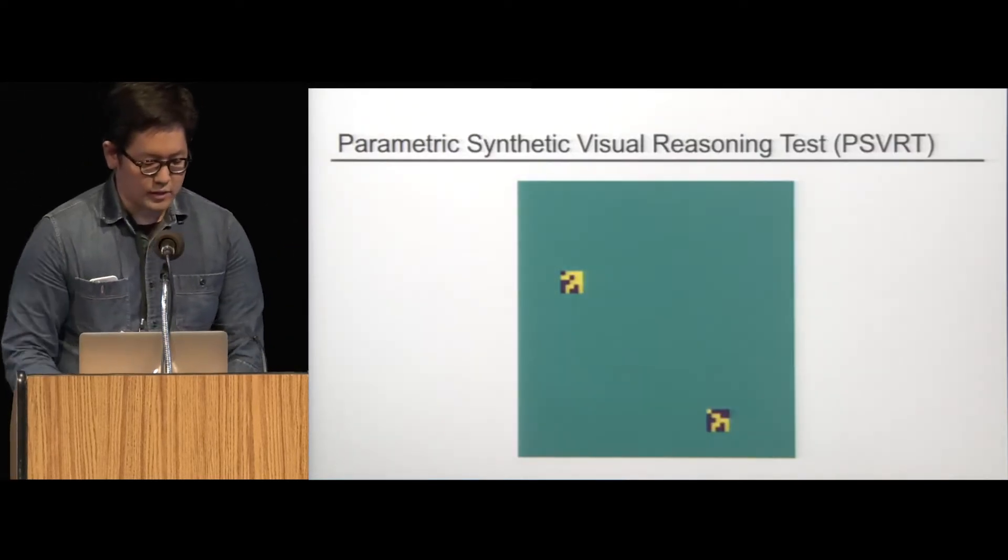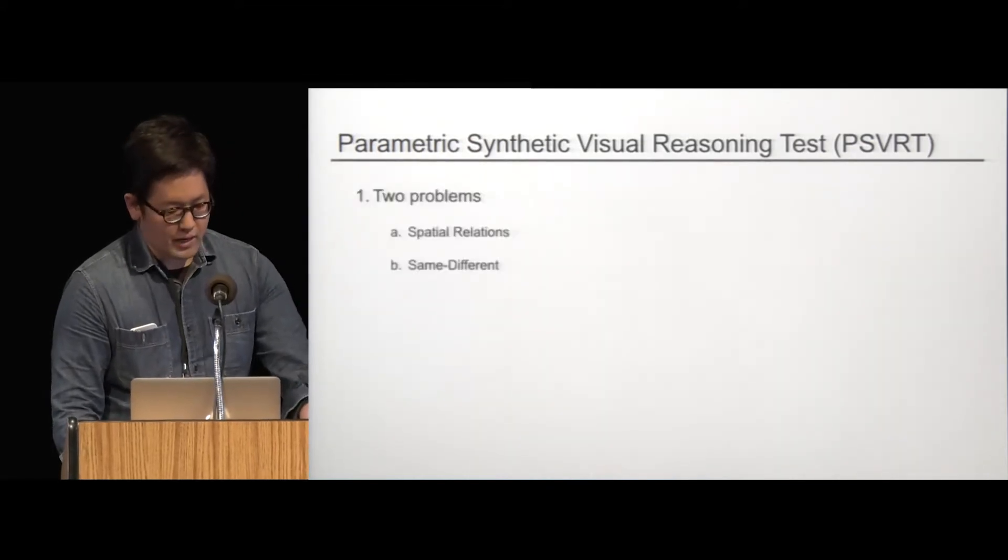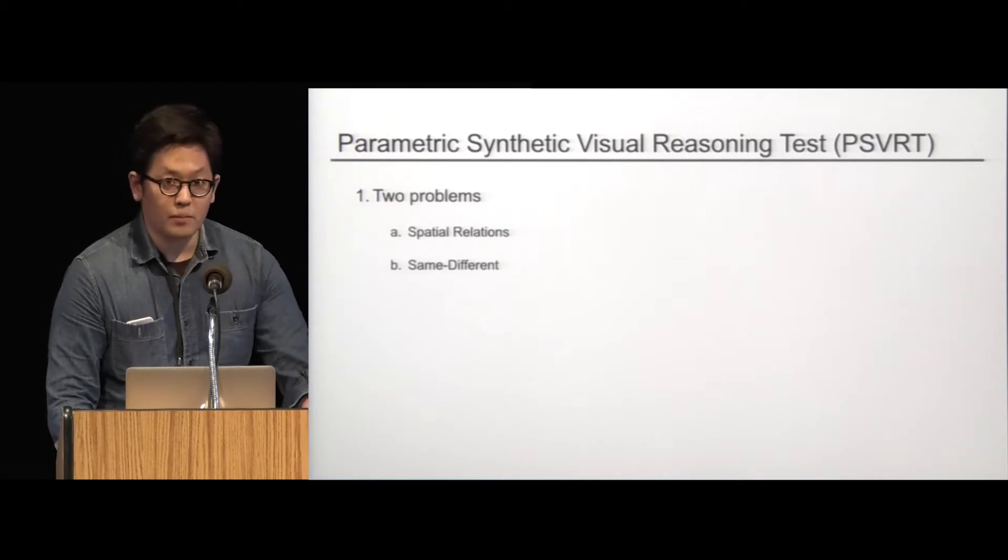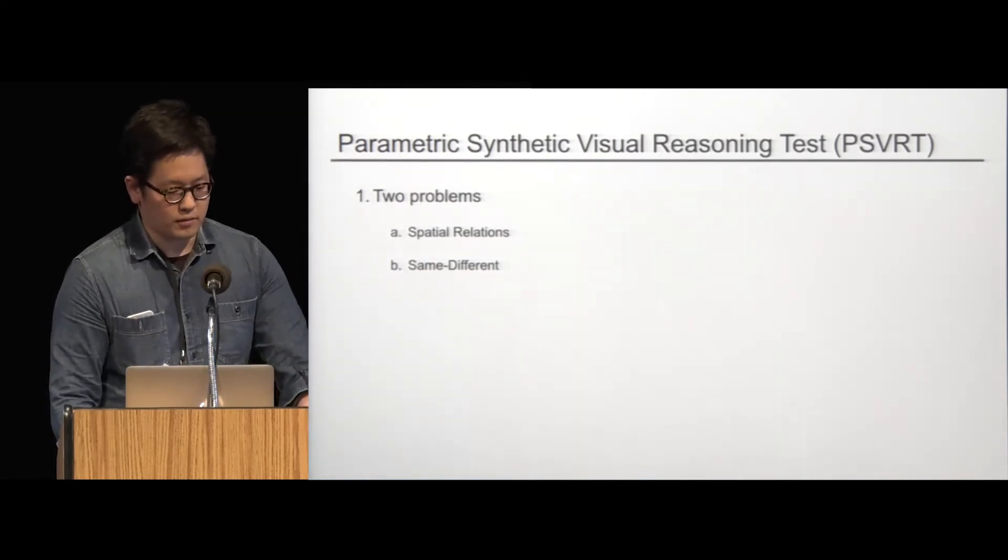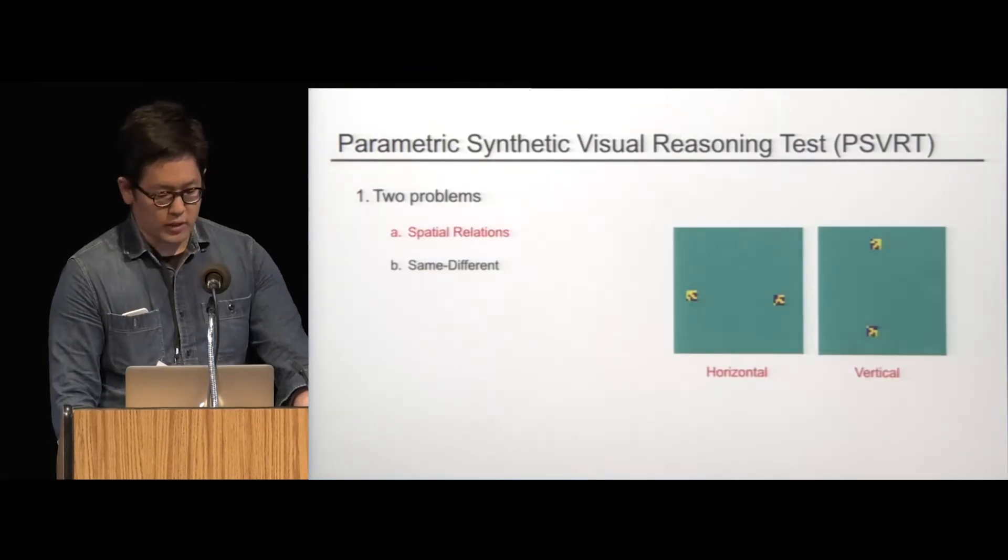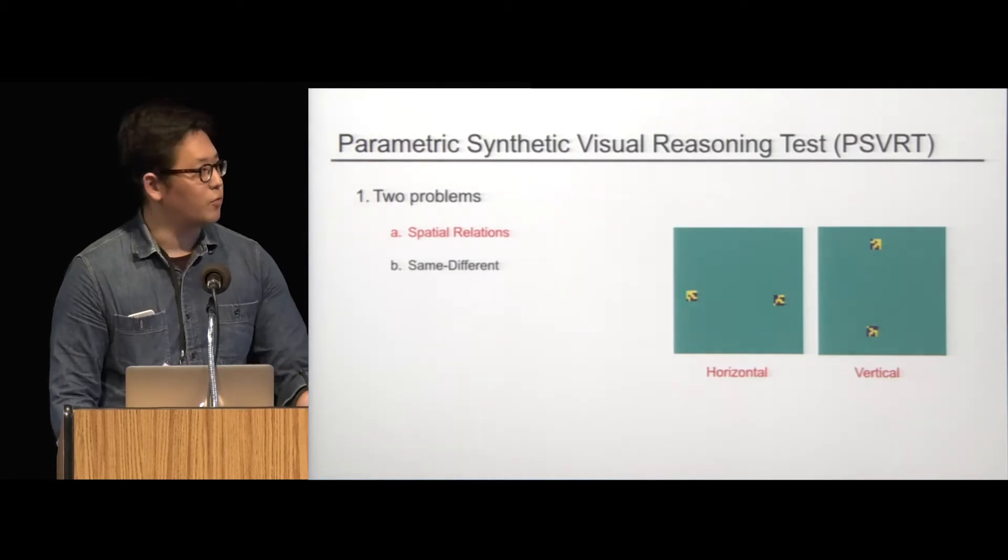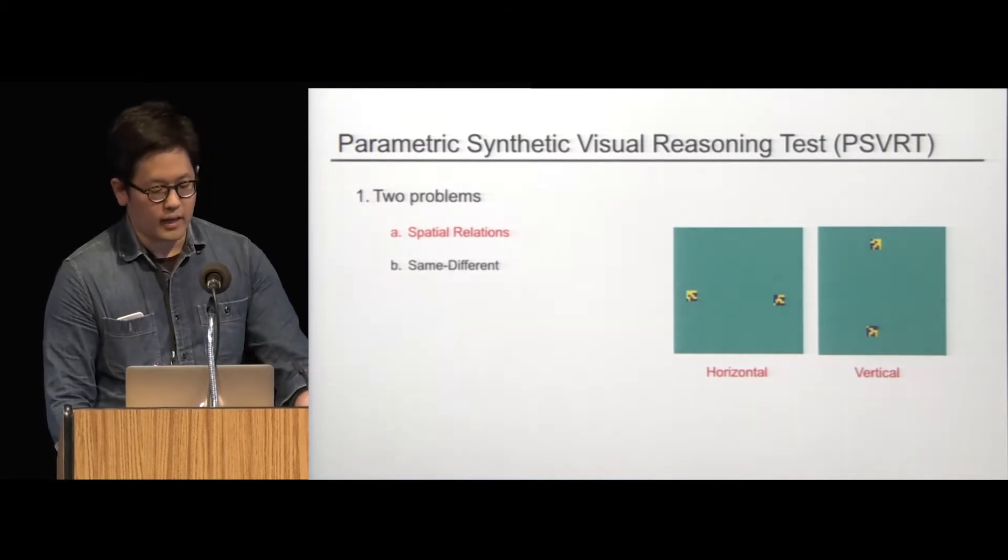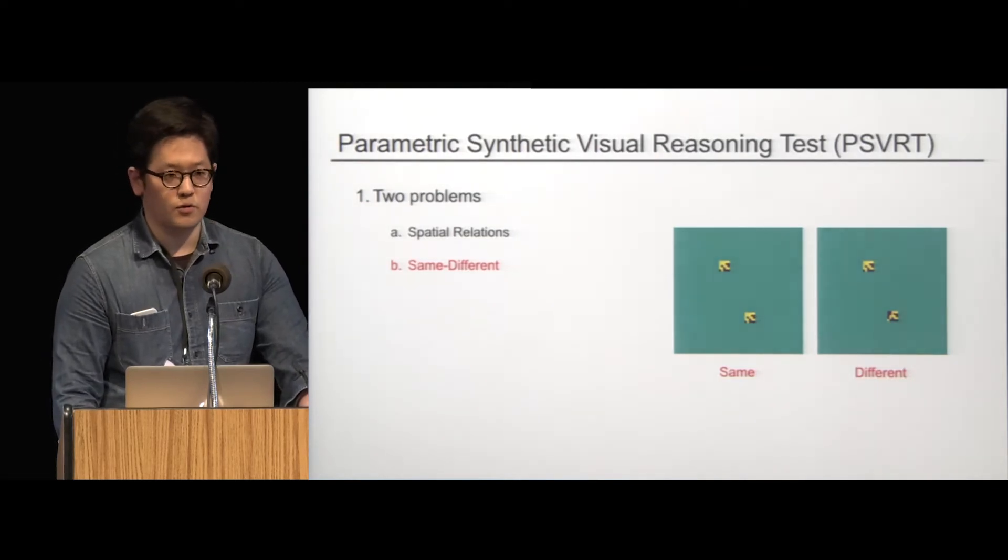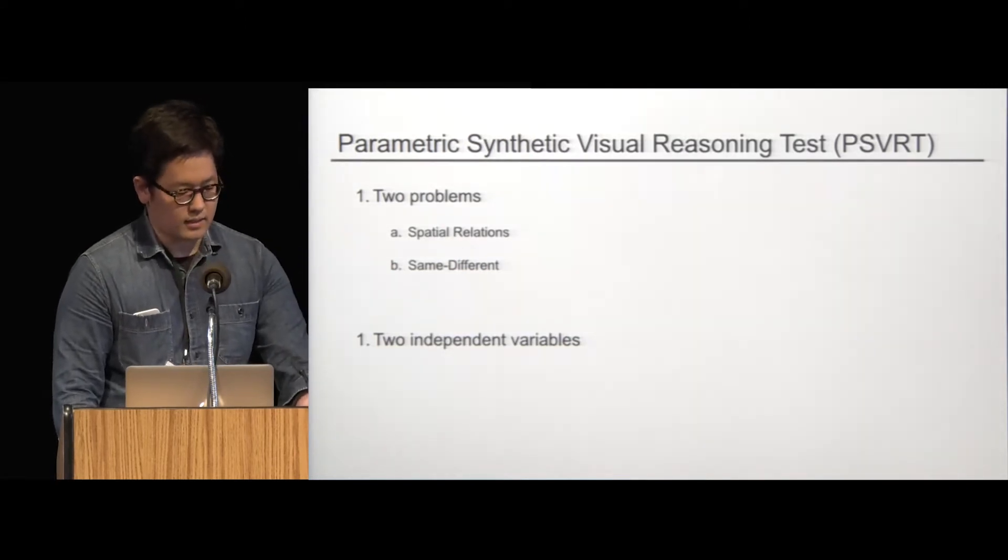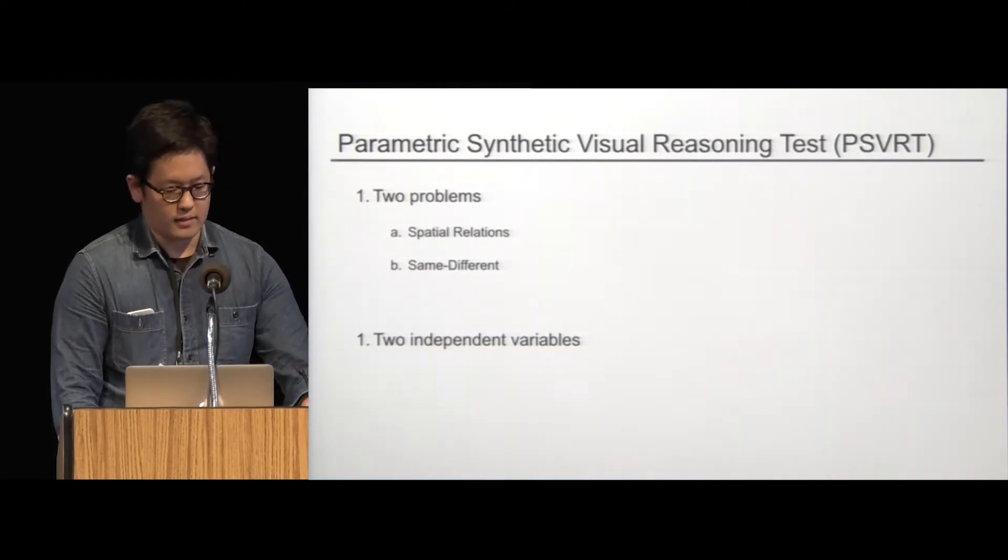Okay. Let's take a look at an example stimulus. Very simple. There are two square binary bit patterns randomly placed in a blank background. Remarkably simple. Parametric SVRT, PSVRT as we call, has two problems, spatial relations and same different. Importantly, both problems share the same image data set. But the images are labeled differently according to two different rules. One rule in spatial relations, the label is determined by whether or not the two items in an image are arranged vertically or horizontally depending on the angle formed between the two, the angle of the line formed between the two objects. And in same different problem, the category is decided by whether or not the two items in the image are identical.